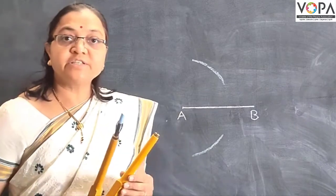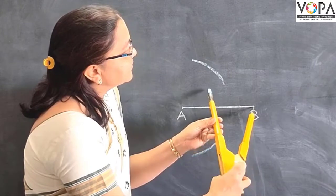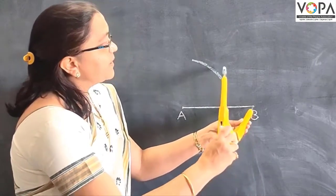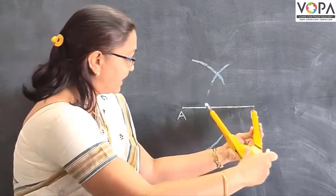Without changing this radius, now take B at the center and draw another arc which intersects the previous one like this.